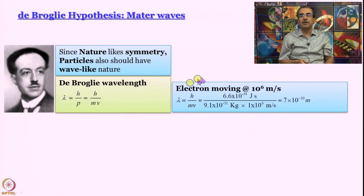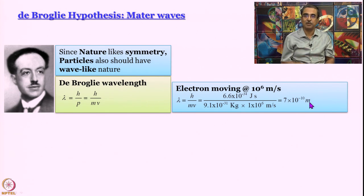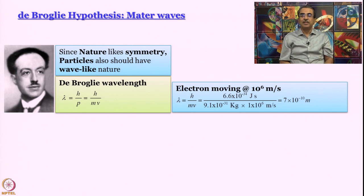And what is lambda? h by mv. Substitute, you are going to get this mvr equal to nh by 2π, that kind of a relationship. And one can calculate the de Broglie wavelength. So this is a calculation on electron moving at 10^6 m/s, you see lambda turns out to be 7×10^-10 meter. And this was experimentally verified as we are going to say very soon. So mathematically there is no problem. You can have wave nature in the small little particles. If you calculate the de Broglie wavelength of a cricket ball moving at say, what is the speed at which Bumrah bowls, 140 kilometer per hour or something.